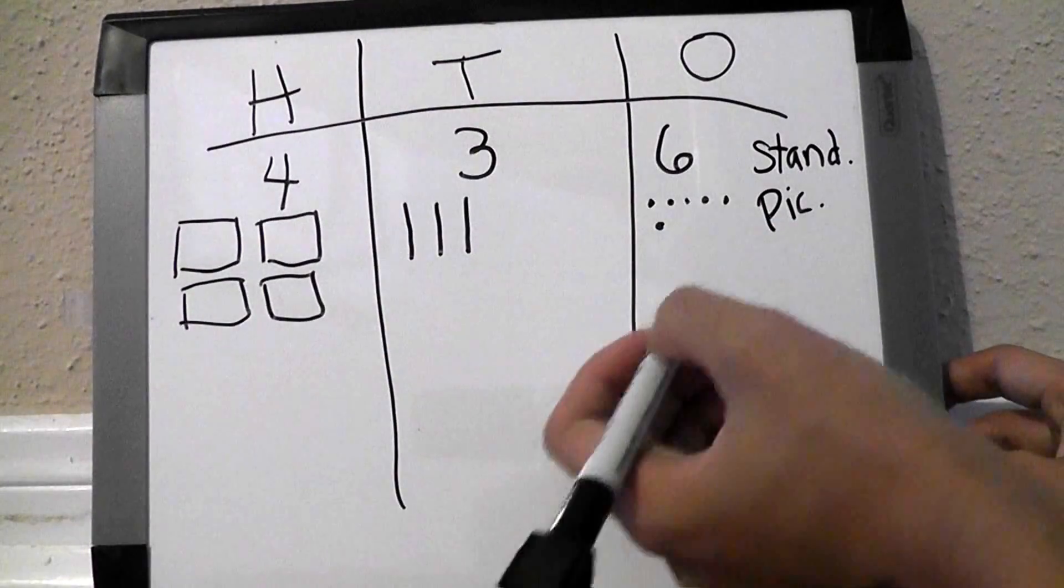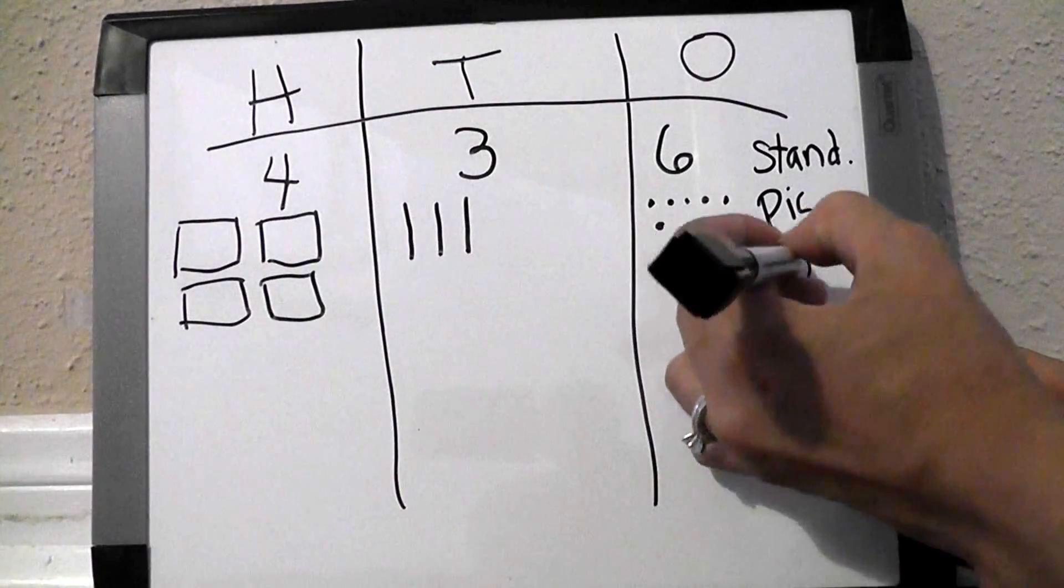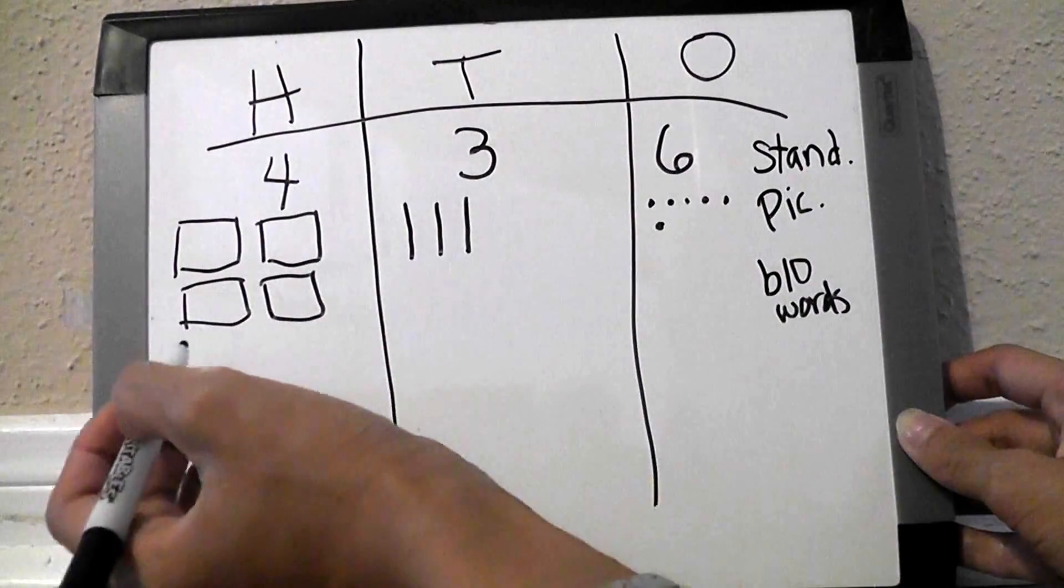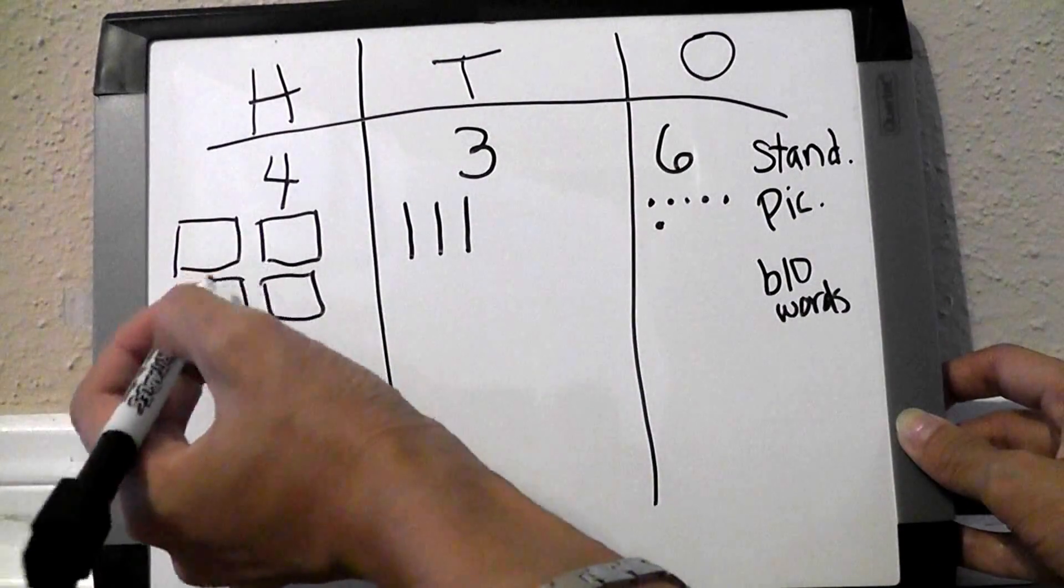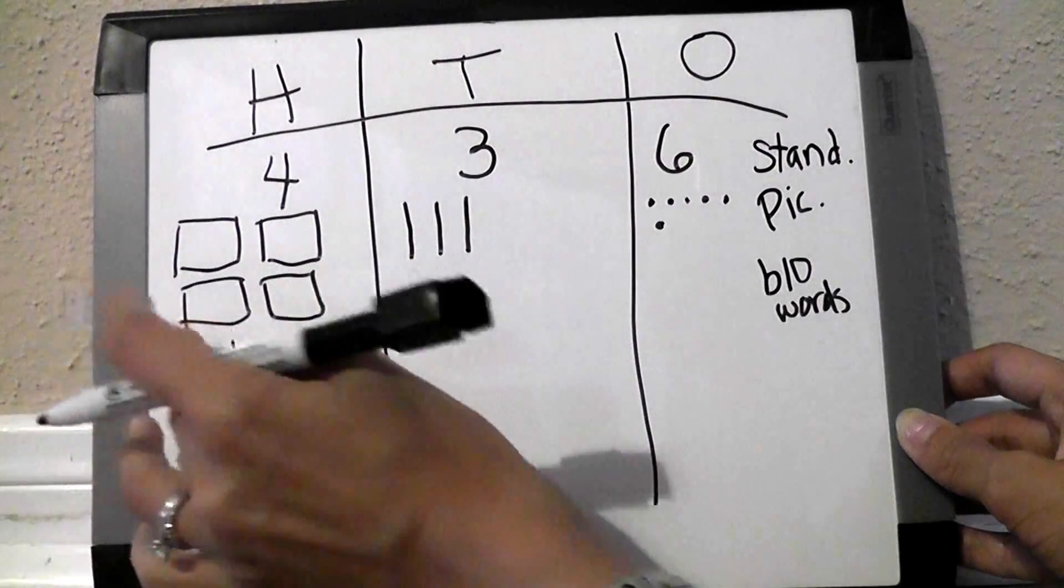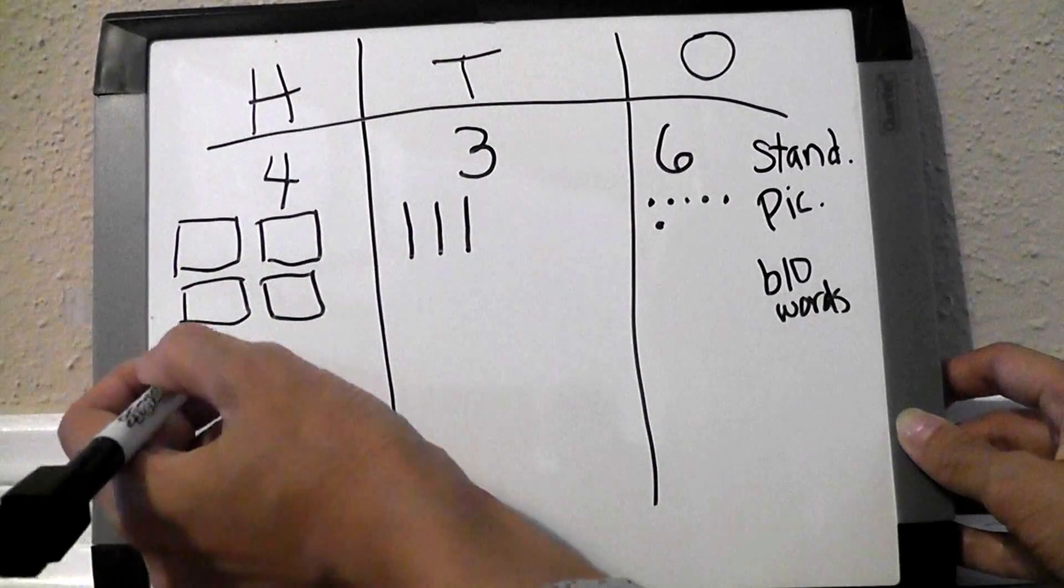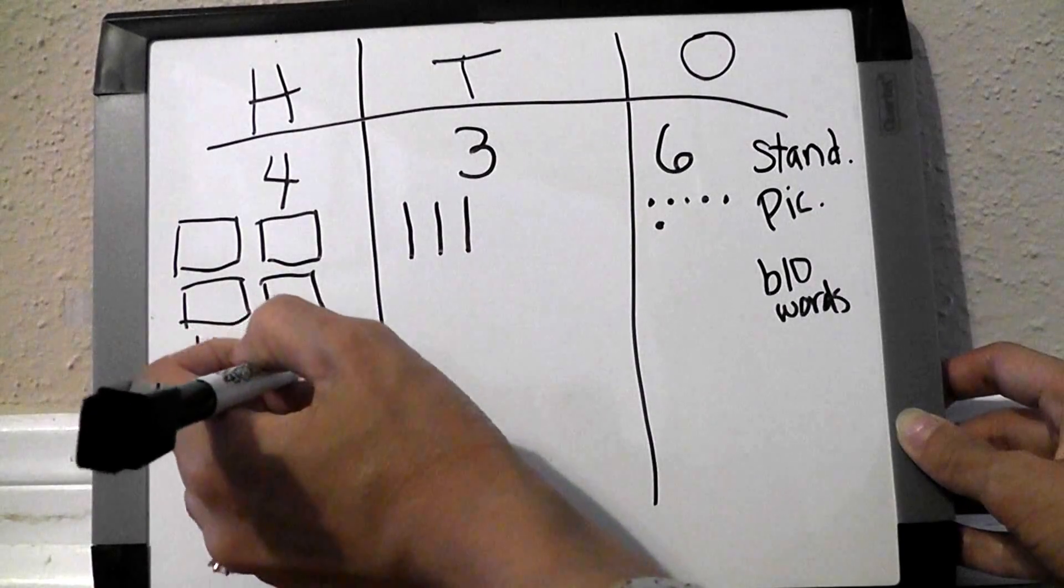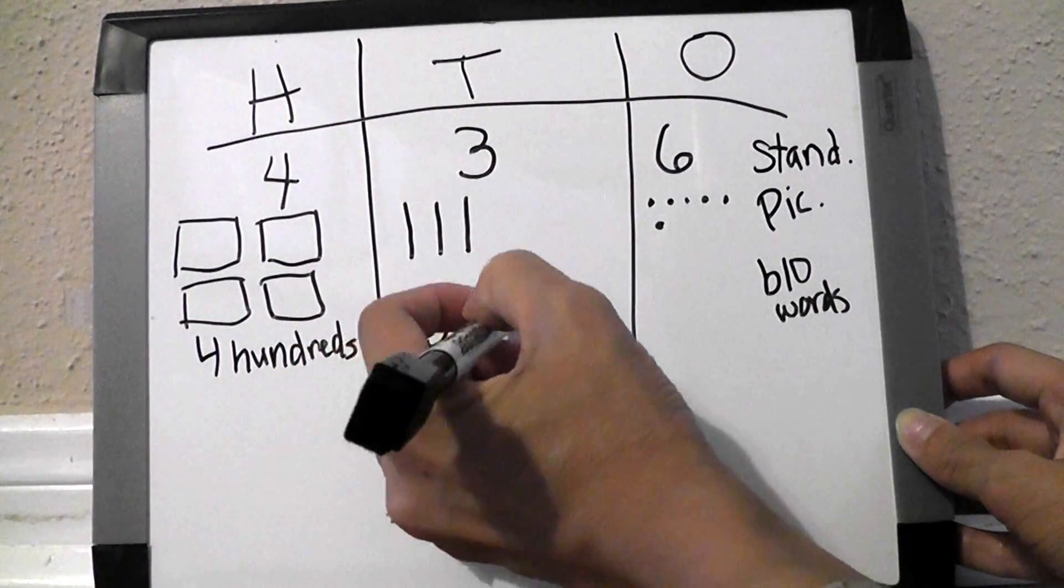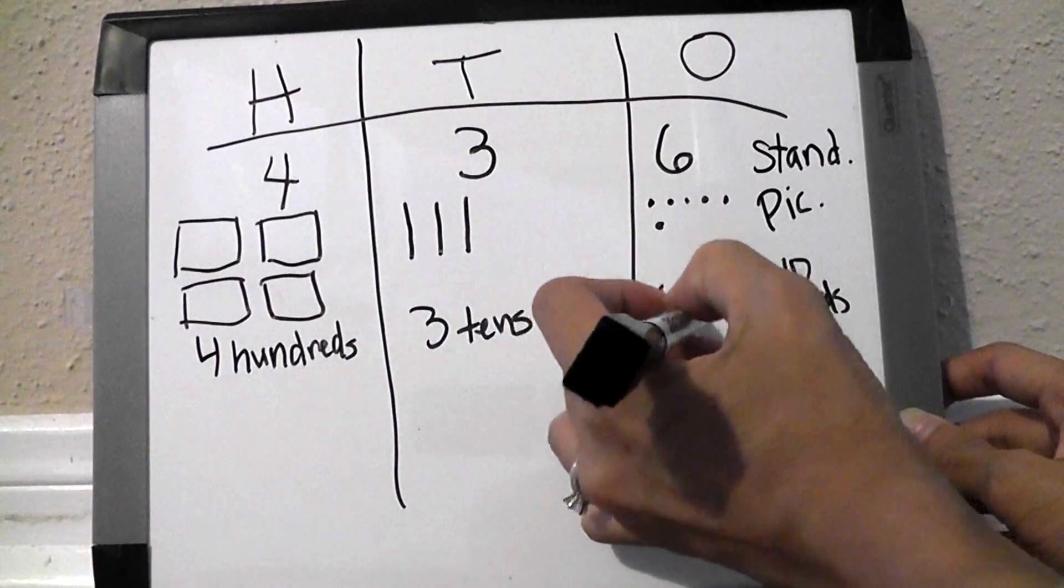The third way of writing a number would be in base ten words. What students would do here would be to look at the picture and basically write out what they see. There are four hundreds, three tens, and six ones.